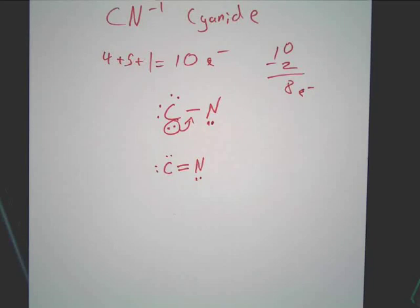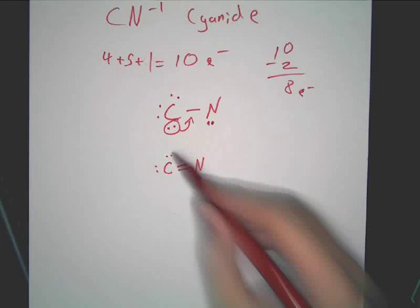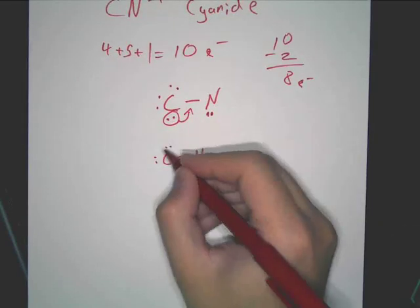Still, nitrogen now has six. Carbon still has eight, though. Do you see why? Yeah. Because this double bond, you still got eight total. So, what's going to occur?